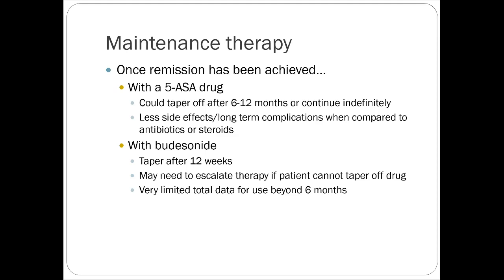Once remission is achieved, you can taper off the steroid or other agent. If remission was achieved with a 5-ASA drug — rare in Crohn's, more of a UC scenario — you could try discontinuing after 6 to 12 months. With budesonide, taper after 12 weeks, but you may need to re-escalate therapy if the patient has trouble tapering off the drug.